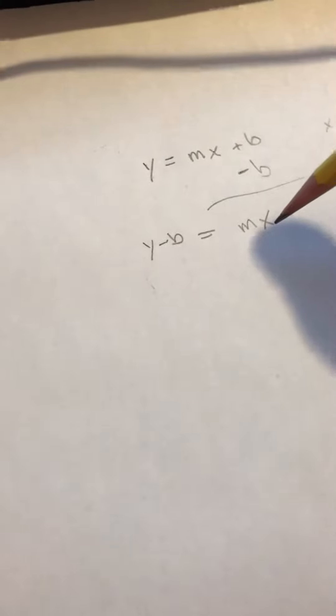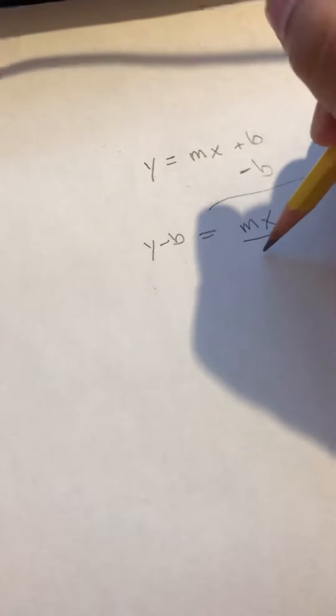So all I'm going to do is I'm going to divide this side by M to get the M off of this side. And whatever I do to this side, I have to do to this side. So I'm going to divide this whole thing by M as well.